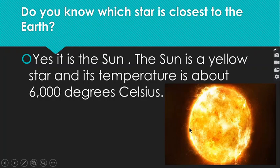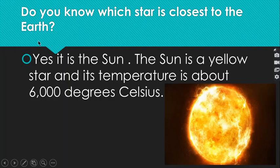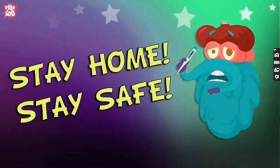Plants also use sunlight to make their food. The sun is the nearest and closest star to the earth. The sun gives us heat and light, and sunlight helps our skin to make vitamin D. The heat of the sun also helps to make wind and rain. Thank you so much for watching this video. I hope now you can understand about the stars and their different types. Stay home, stay safe. Allah Hafiz.